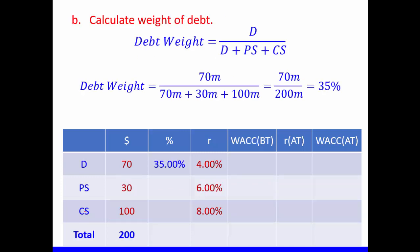The next part is to calculate the weight of debt. The weight of debt — or percentage of debt — is the market value of debt divided by the total. Remember, this total is enterprise value. If we don't have cash, enterprise value will be the same as market value of asset. So 70 divided by 200 gives us 35%.